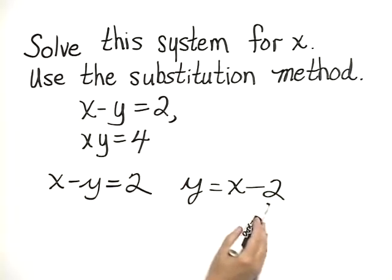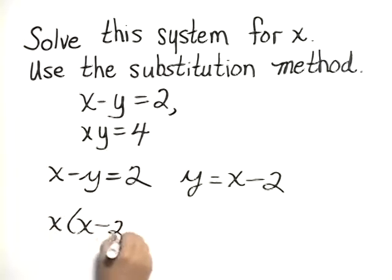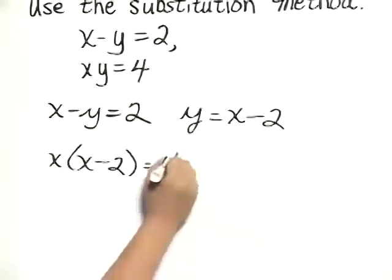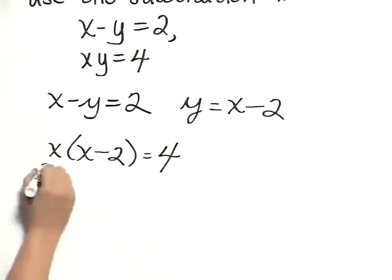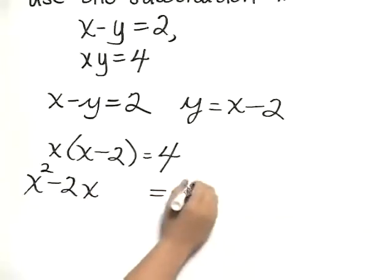Substituting x minus 2 for y in the second equation gives us x times x minus 2 equals 4, and multiplying we have x squared minus 2x equals 4.